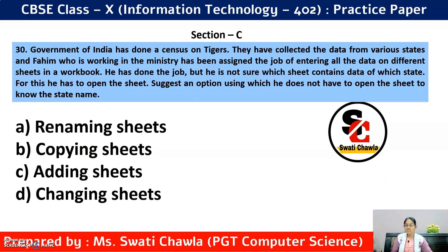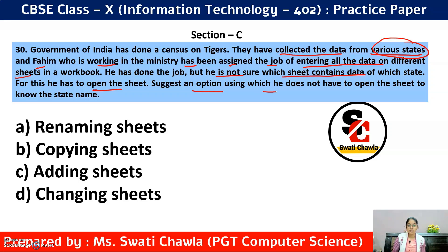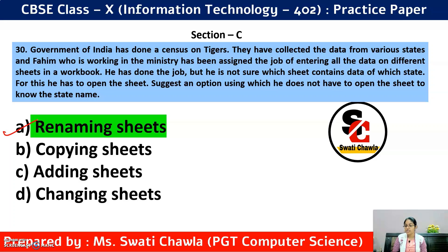Question 30: The Government of India conducted a census on tigers, collecting data from various states. Fahim, working in the ministry, entered all data on different sheets. He is not sure which sheet contains data for which state without opening the sheet. The solution is option A — Renaming the sheets. He should rename each sheet with the name of the state whose data it contains.